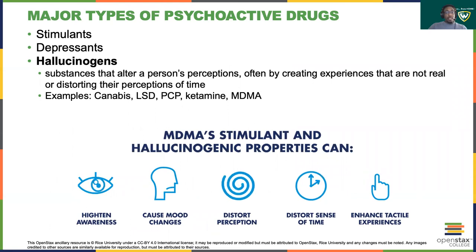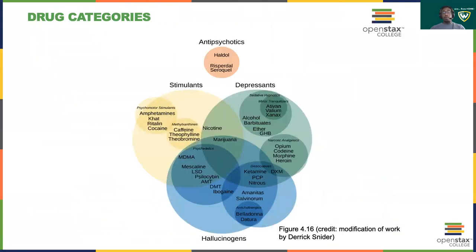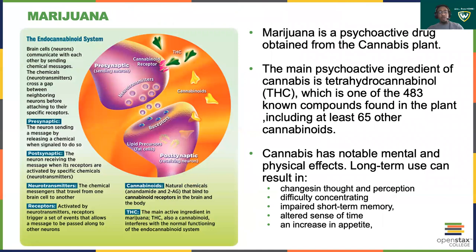The next major type of psychoactive drug is hallucinogens. These are substances that alter a person's perceptions, creating experiences that are not real, distorting their sense of time, enhancing sensory experiences, and causing changes in mood. One of the most popularly used hallucinogens is marijuana, which has properties of both stimulants and depressants. It is used by many individuals to relax or relieve pain for those with chronic medical conditions, but long-term use can result in cognitive impairment, difficulties concentrating, and a long-term increase in appetite.